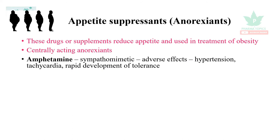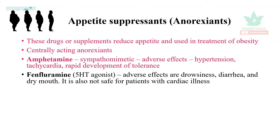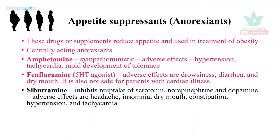tachycardia, and rapid development of tolerance. Fenfluramine is a 5-HT agonist; its adverse effects are drowsiness, diarrhea, and dry mouth. It is also not safe for patients with cardiac diseases. Sibutramine inhibits the reuptake of serotonin,